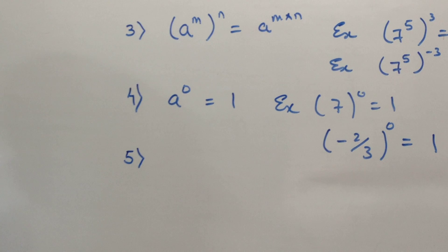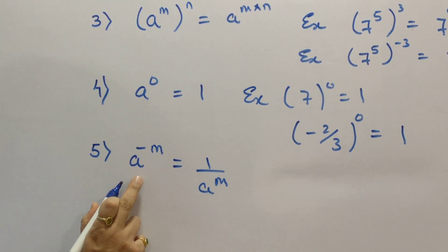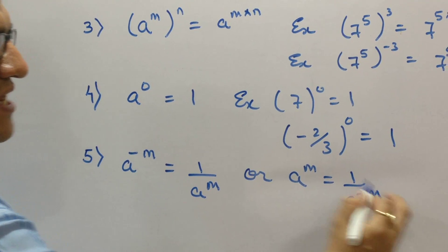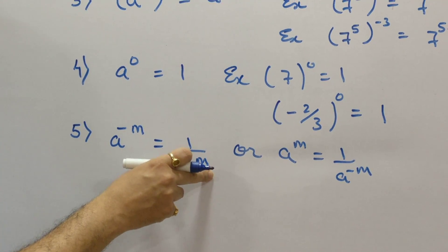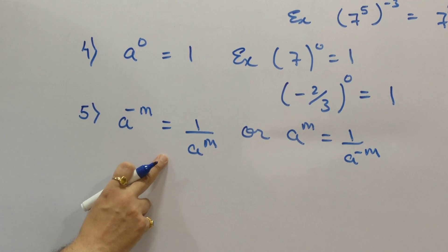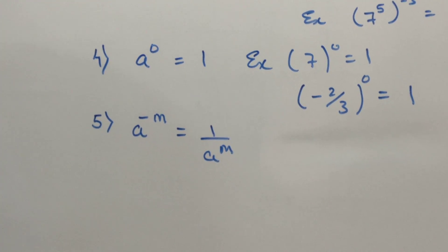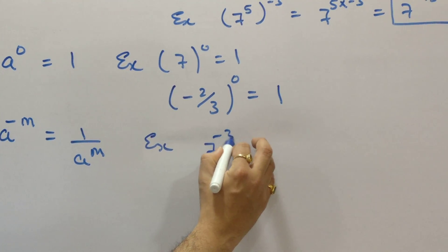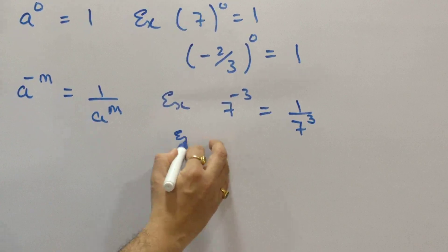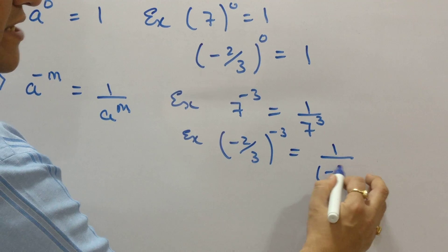Law 5: A raised to minus M is 1 upon A raised to M. Be very careful — A raised to minus M is 1 upon A raised to M. Or, A raised to M is 1 upon A raised to minus M. A raised to a negative power becomes 1 upon A raised to a positive power. Example: 7 raised to minus 3 is 1 upon 7 raised to 3. Another example: minus 2 by 3 raised to minus 3. Answer will be 1 upon minus 2 by 3 raised to 3.